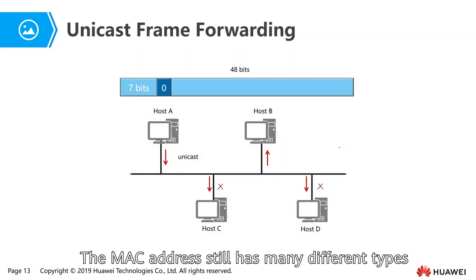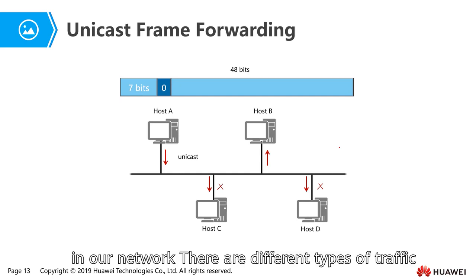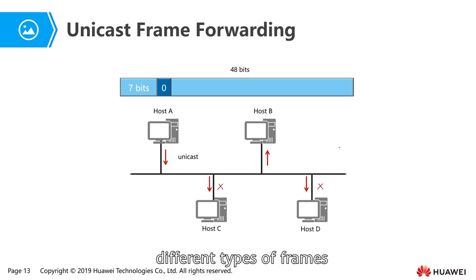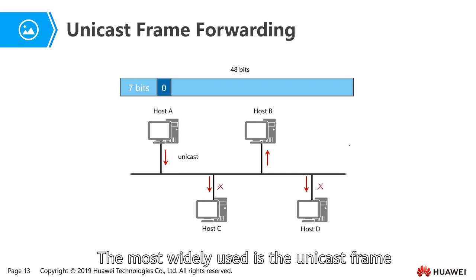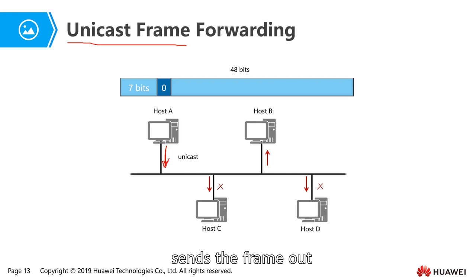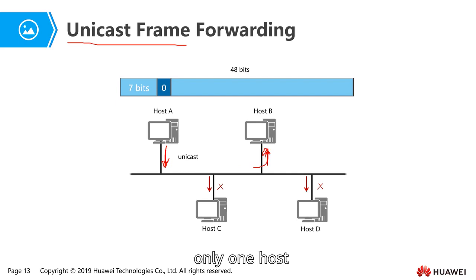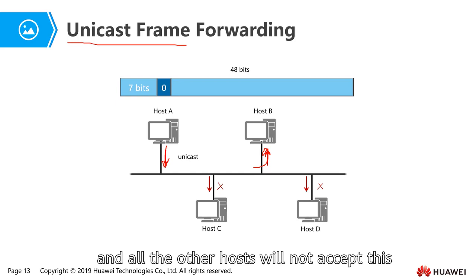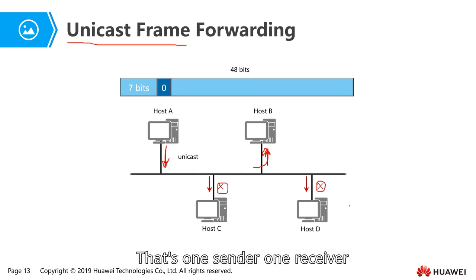The MAC address still has different types. In our network, there are different types of traffic and different types of frames. Of course, the most widely used is the unicast frame. What does unicast mean? Unicast means when the computer sends the frame out, the destination is only one computer, only one host. All the other hosts will not accept this. That's one sender, one receiver.